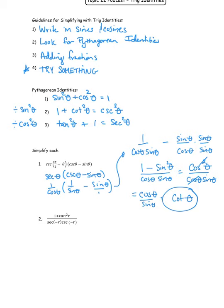For question number two, it's another simplify problem. I see 1 + tan²r over secant(−r)·cosecant(−r). I see that squared and I think Pythagorean identity. Looking at the third identity: tangent squared plus one equals secant squared. So 1 + tan²r simplifies to secant squared r. Note: this variable is r, so write the r — I will mark it wrong if you don't.